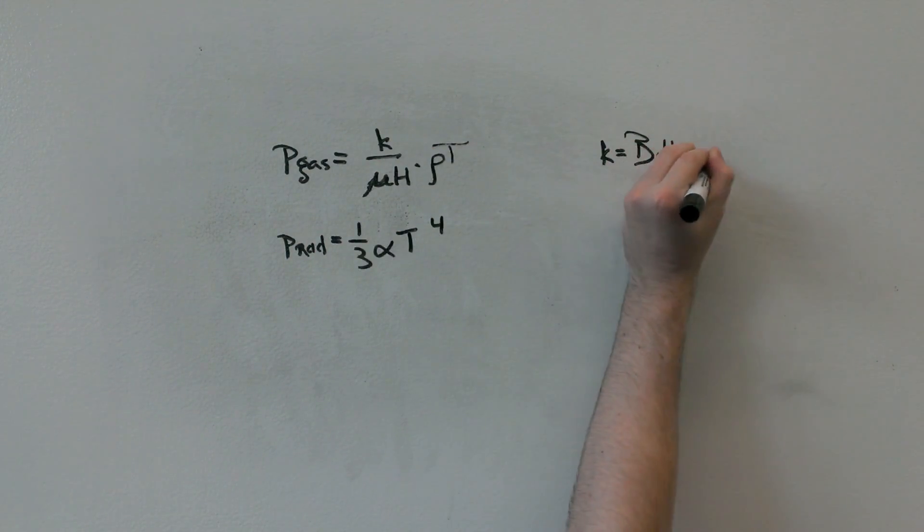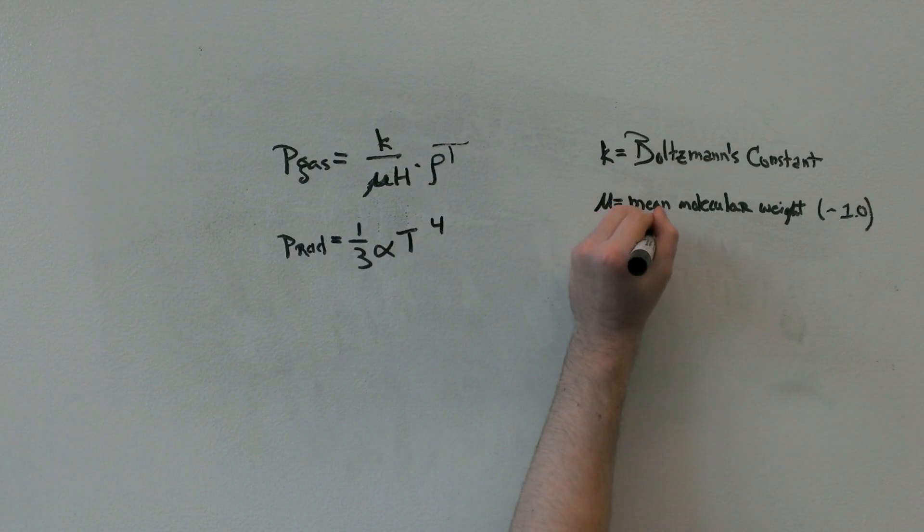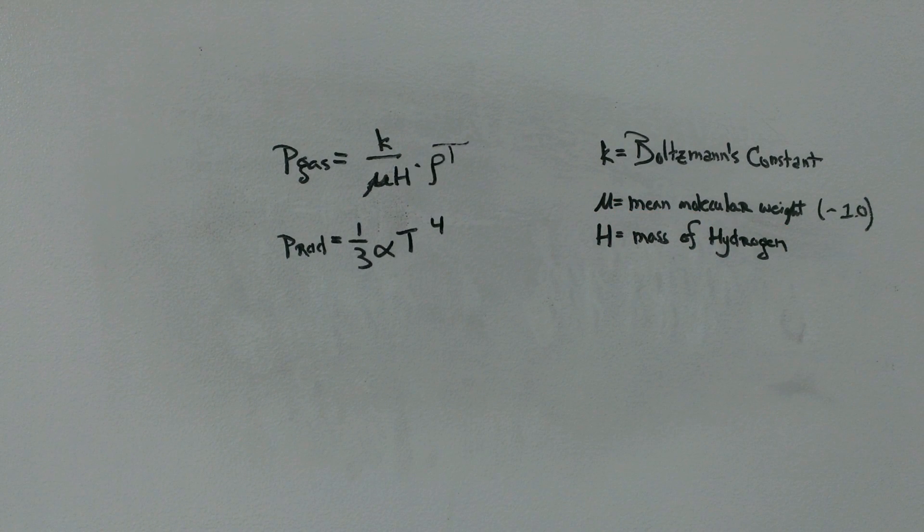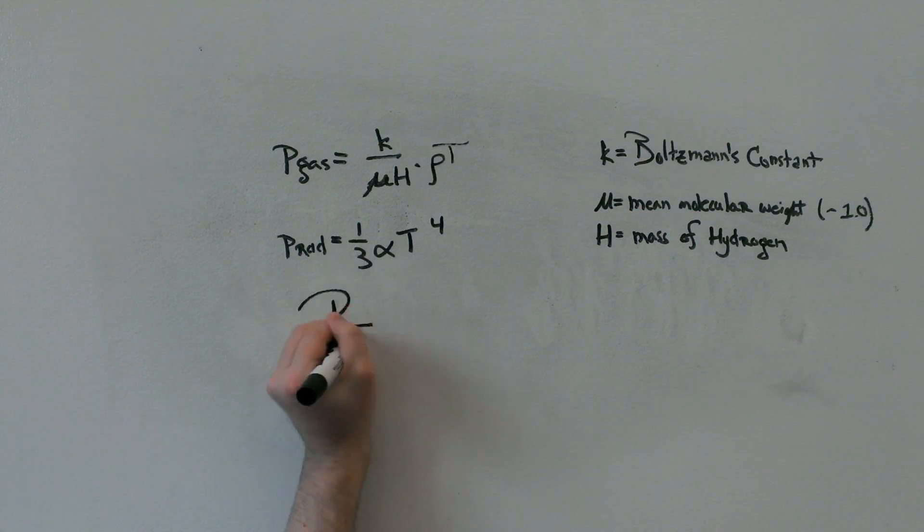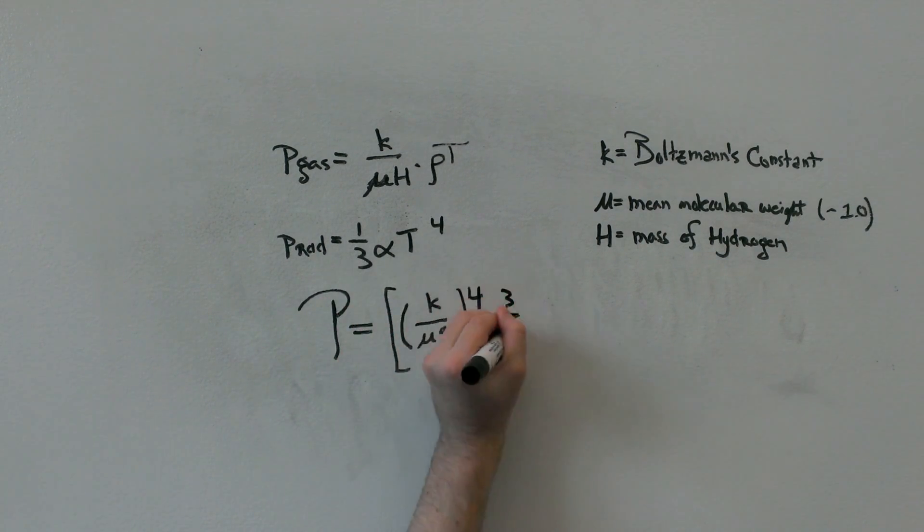Here, mu is the mean molecular weight, which in stars is about 1.0. H is the mass of hydrogen atoms, and k is the ever-familiar Boltzmann's constant. Hence, the total pressure can be found as a function of beta.